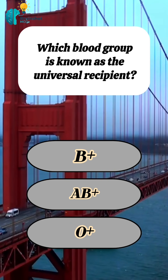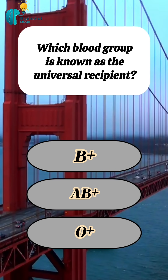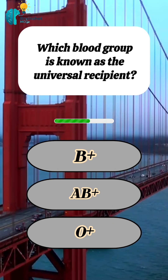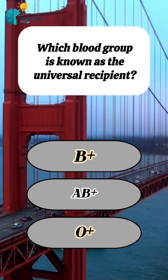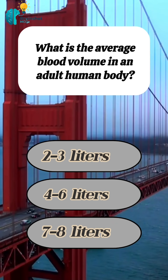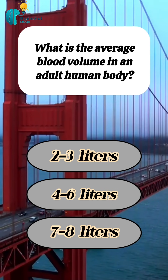Which blood group is known as the universal recipient? Correct answer: AB+.